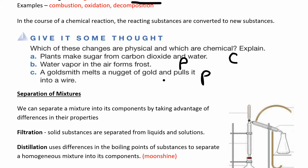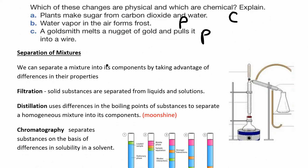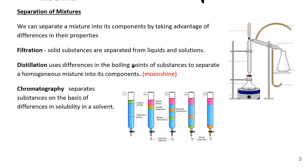When you have mixtures, there are many ways to separate them. Filtration: maybe you have a coffee maker with filter paper and you can separate solids from liquids. You can separate things based on their phase of matter — the filter paper has little pores, water goes right through, but the coffee part gets stuck there.